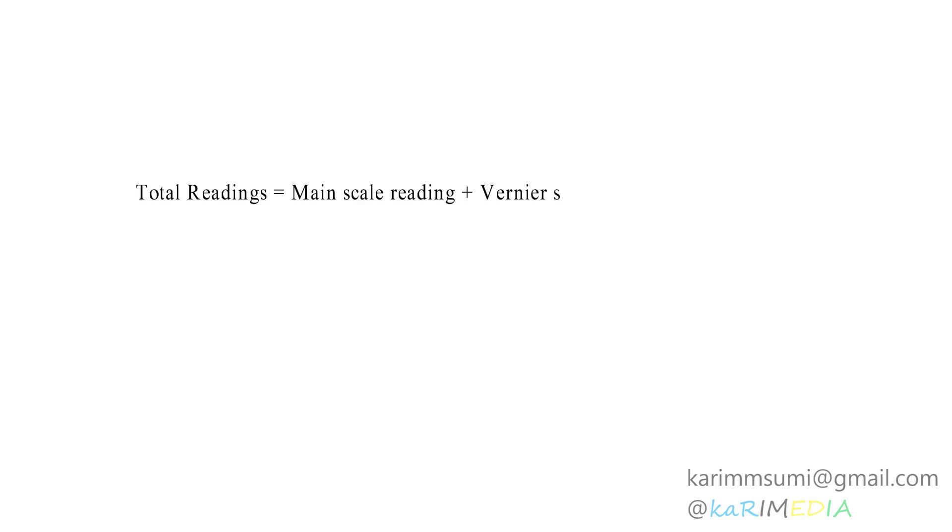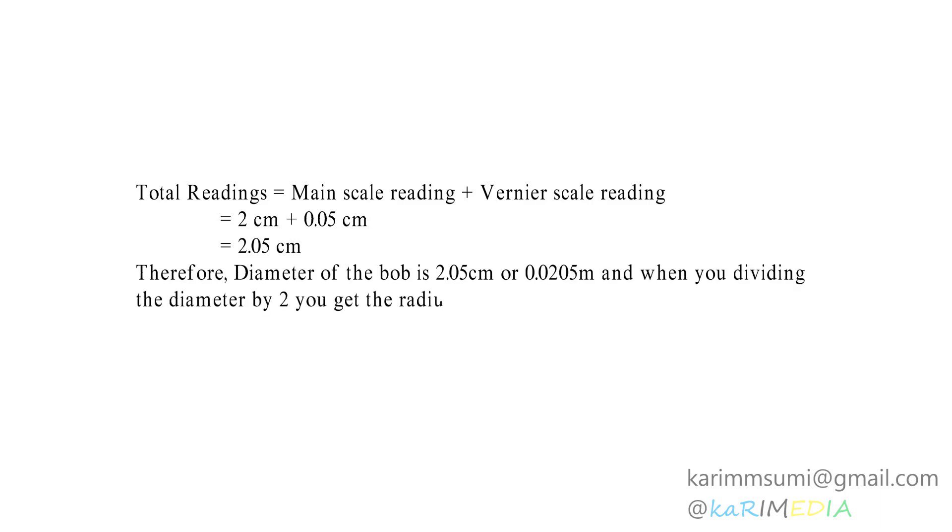Lastly, to get the diameter of the bob, the main scale reading must be added to the vernier scale reading. After the operation, we get the diameter of the bob as 2.05 cm, which equals 0.0205 m.